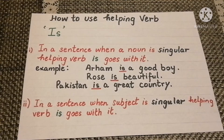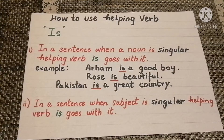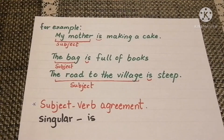How to use helping verb 'is' in a sentence. When a noun is singular, helping verb 'is' goes with it. For example: Arham is a good boy. Rose is beautiful. Pakistan is a great country. When the subject in a sentence is singular, helping verb 'is' goes with it. For example: my mother is making a cake.